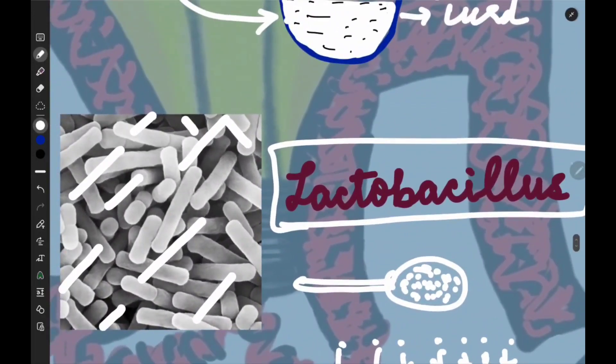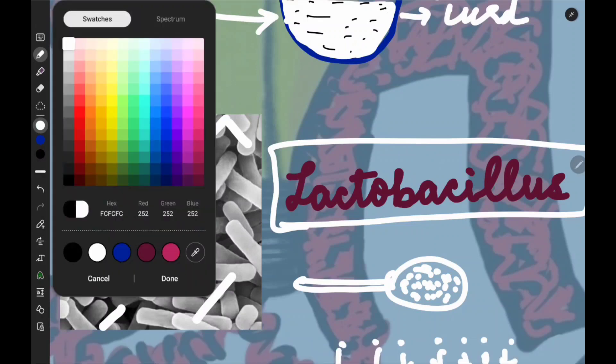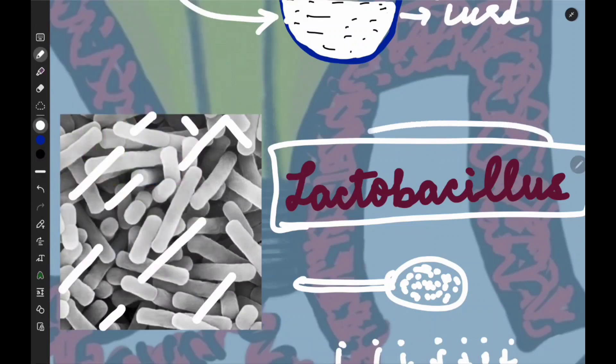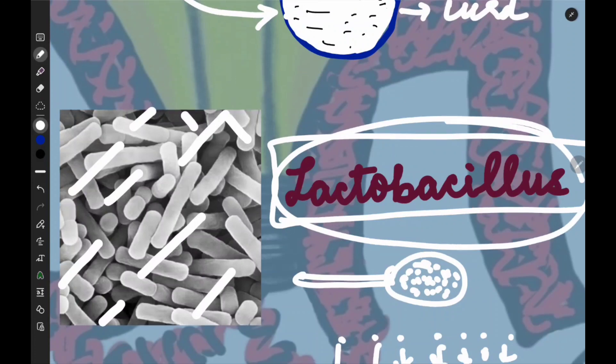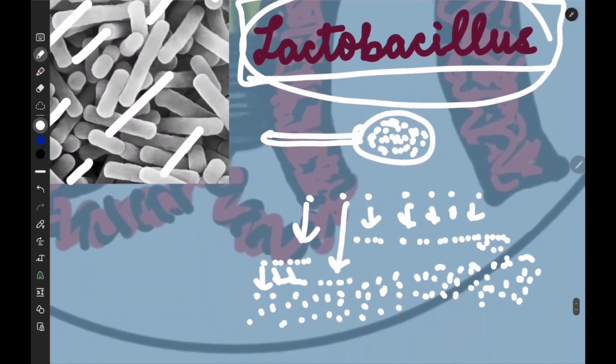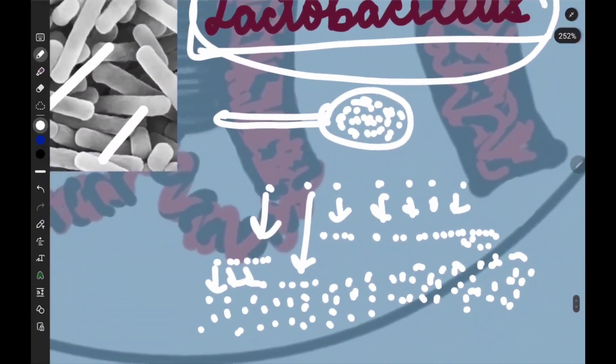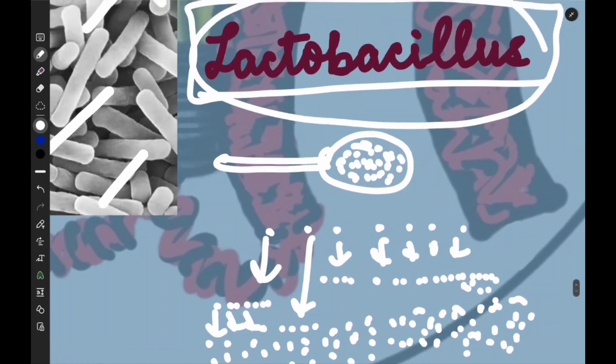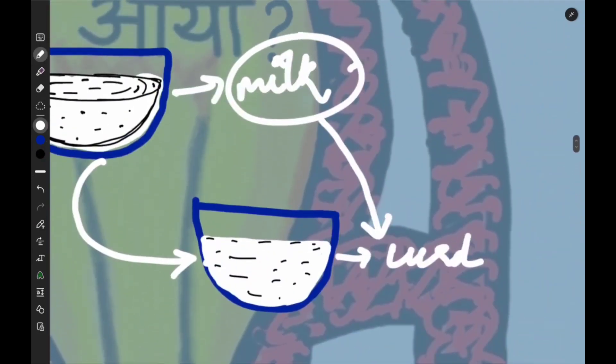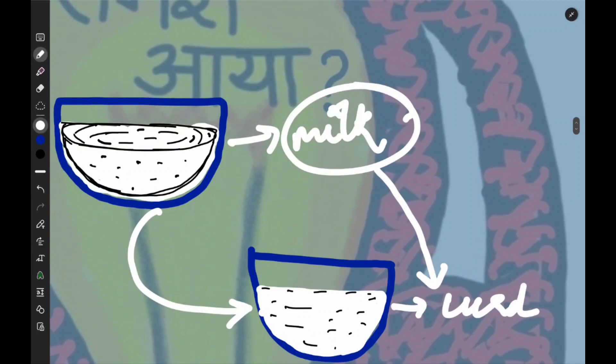The name of bacteria will be known as Lactobacillus bacteria. This is the name of bacteria. Remember why this is happening. This is why our milk is converted into curd. The bacteria will be multiplied and converted into curd.